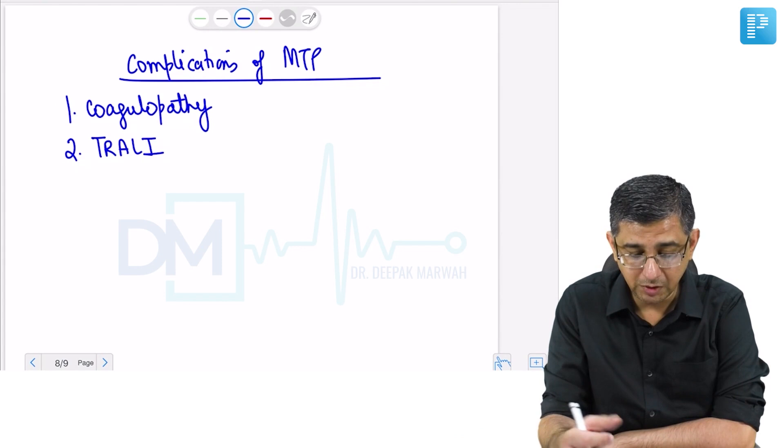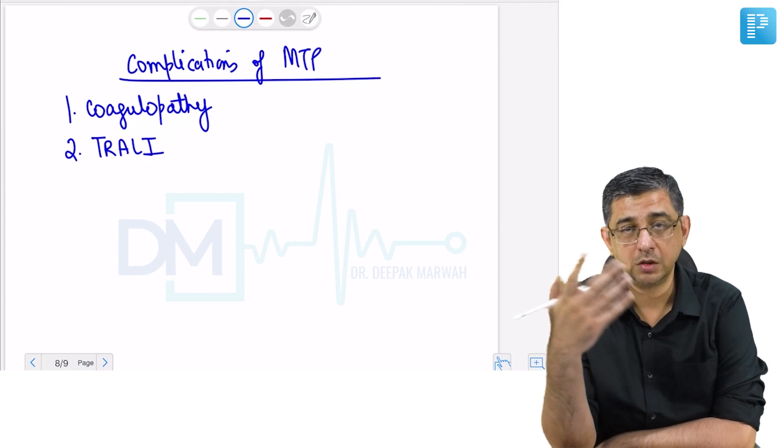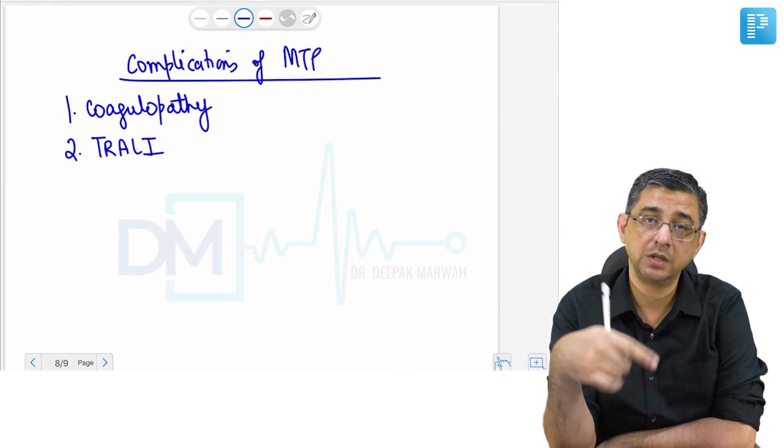Our objective is to control this coagulopathy. If you are able to control this, but the person still dies, then the cause of death is TRALI. Please appreciate that coagulopathy was the trigger because of which he was bleeding. You have successfully treated the coagulopathy, but still the person died.